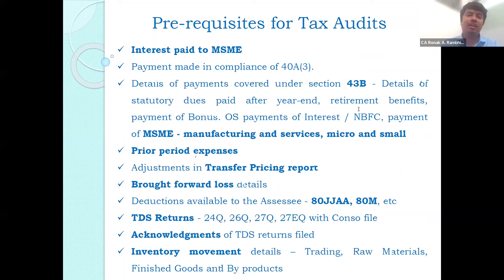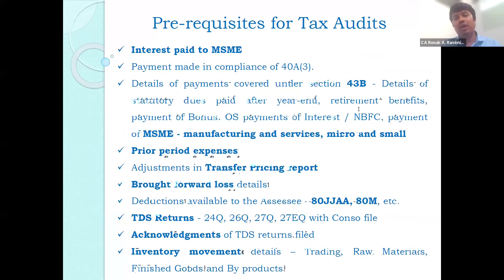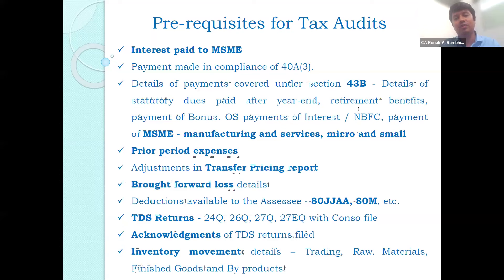For MSME, one has to mention whether any interest is paid to MSME parties. Under the new Section 43BH, one has to see whether the vendor is a manufacturer, trader, or service provider — only manufacturers and service providers are covered under 43BH. The medium category is not covered. The section provides that MSMEs must be paid within 45 days as per the MSME Act. Outstanding amounts as on year-end must be verified against the applicable due date; if not paid timely, they become a disallowance under Section 43BH.